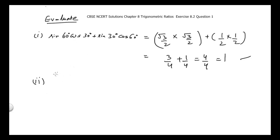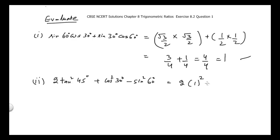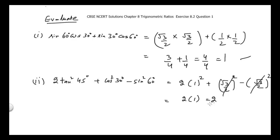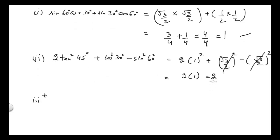The second part is: 2 tan²45° + cos²30° − sin²60°. The value of tan 45° = 1, so tan²45° = 1. The value of cos 30° = √3/2, so cos²30° = 3/4. The value of sin 60° = √3/2, so sin²60° = 3/4. These two terms cancel each other, and we have 2 × 1 = 2.